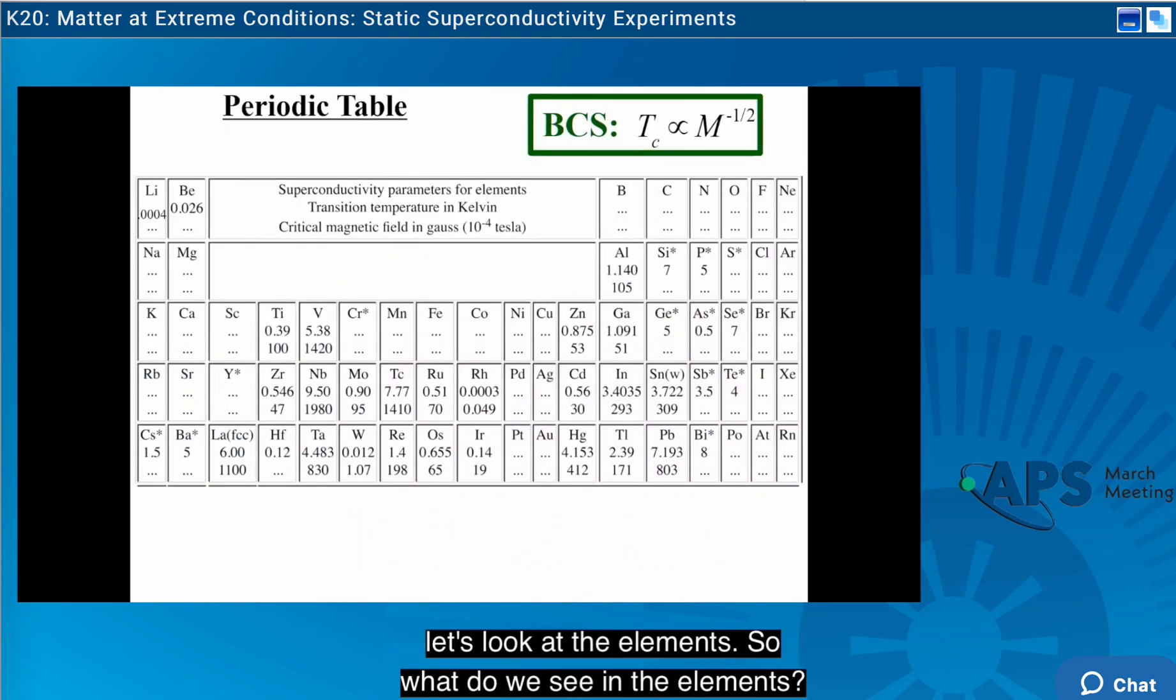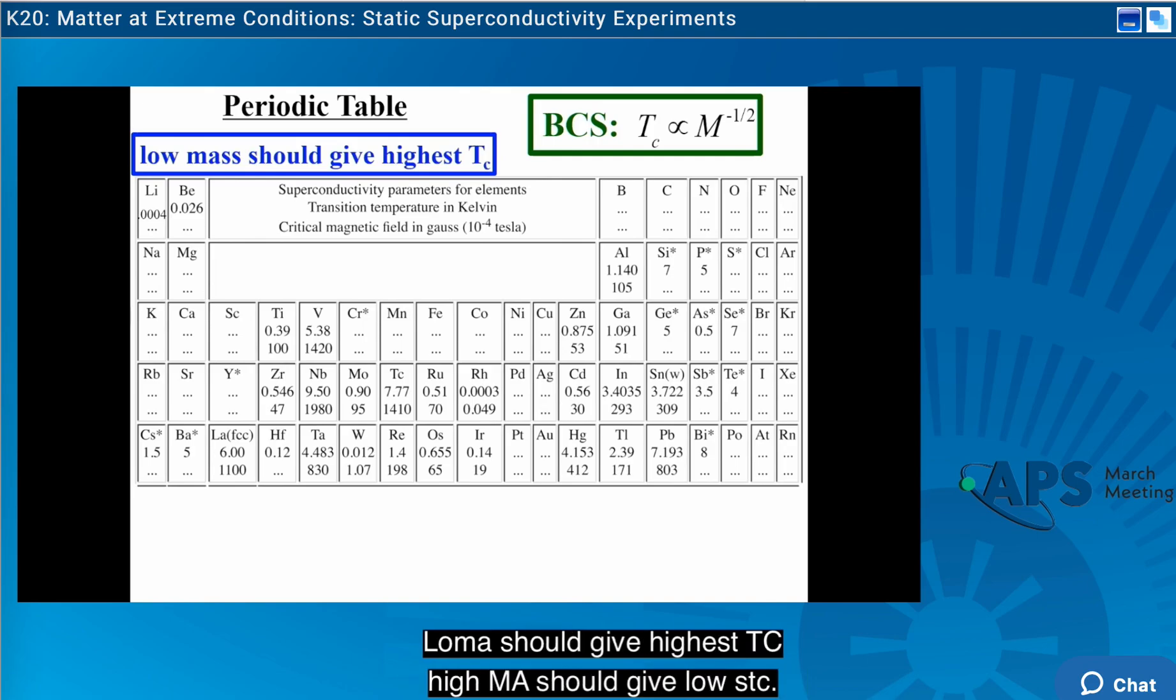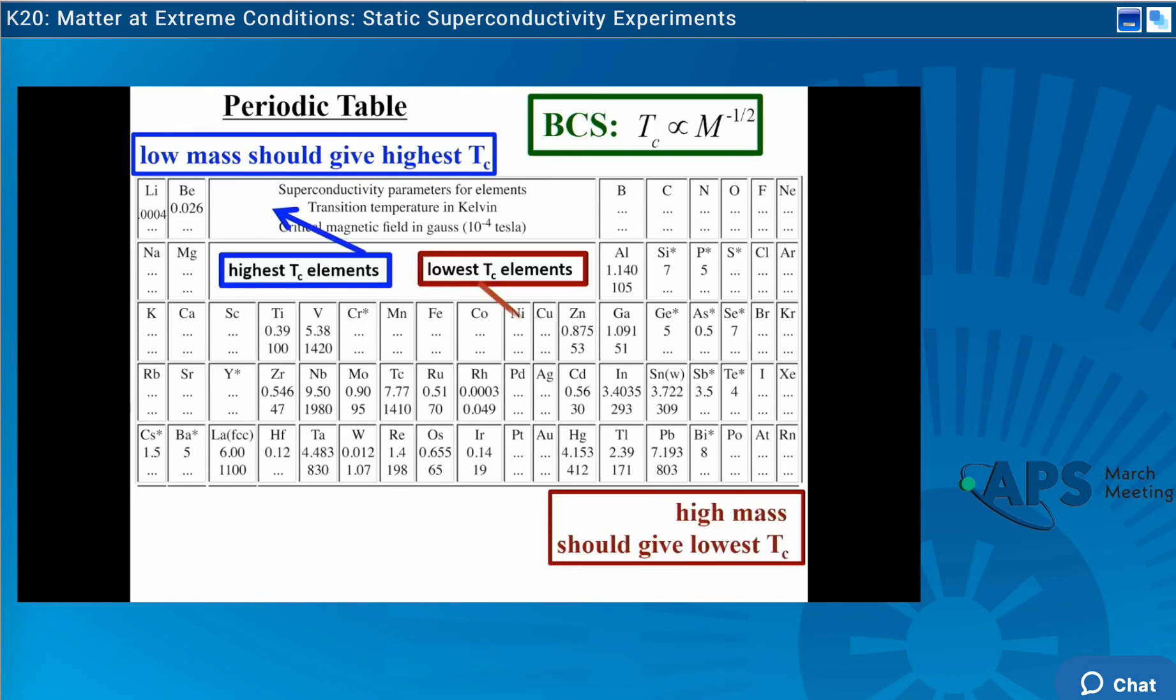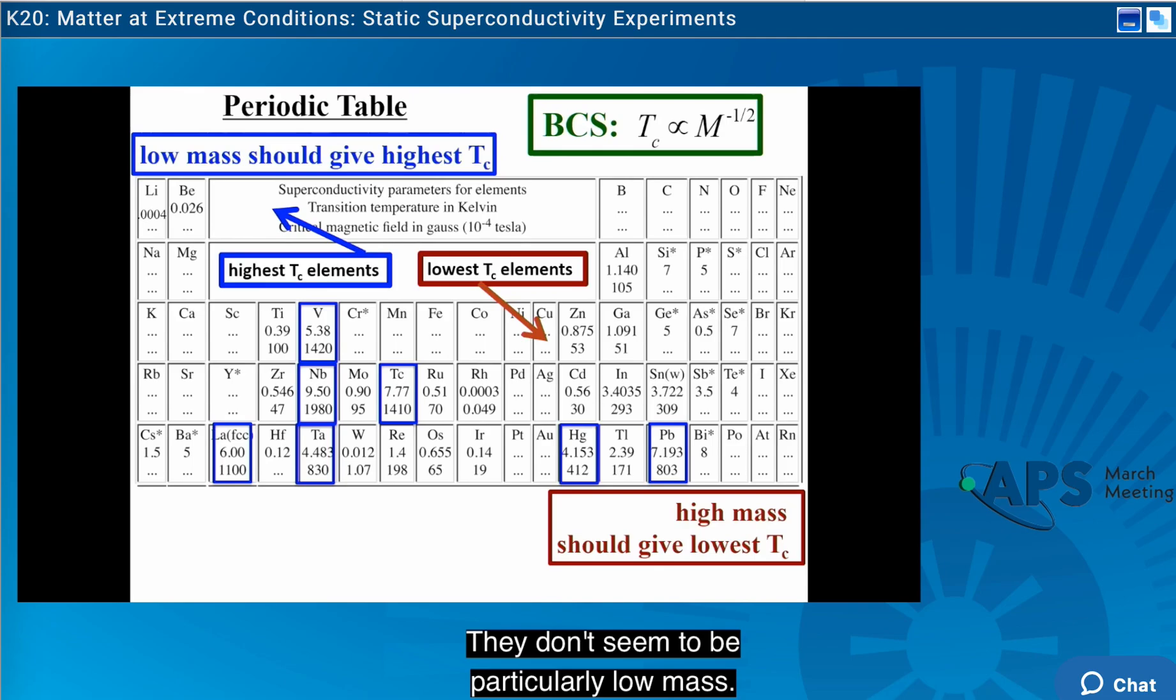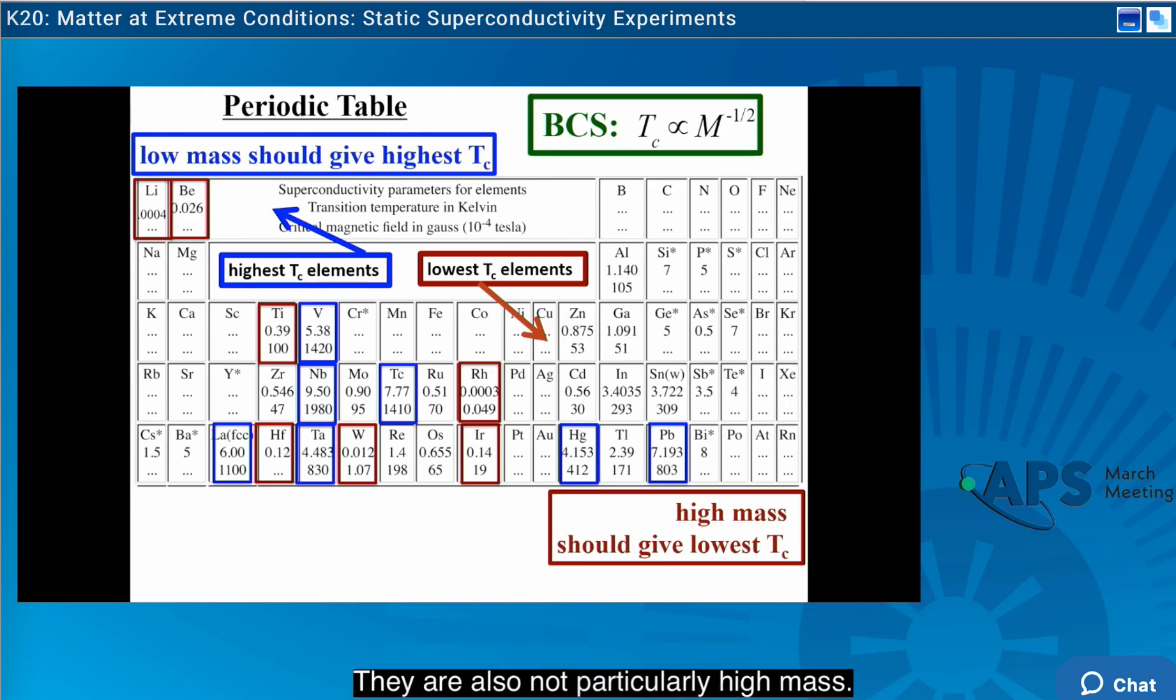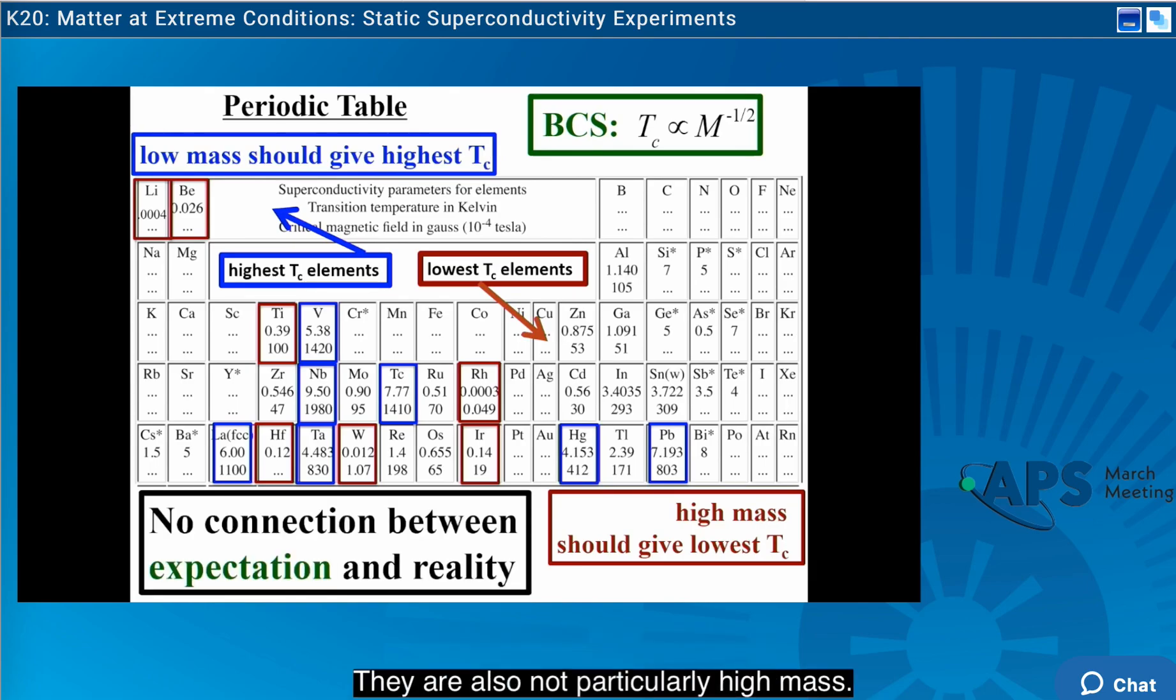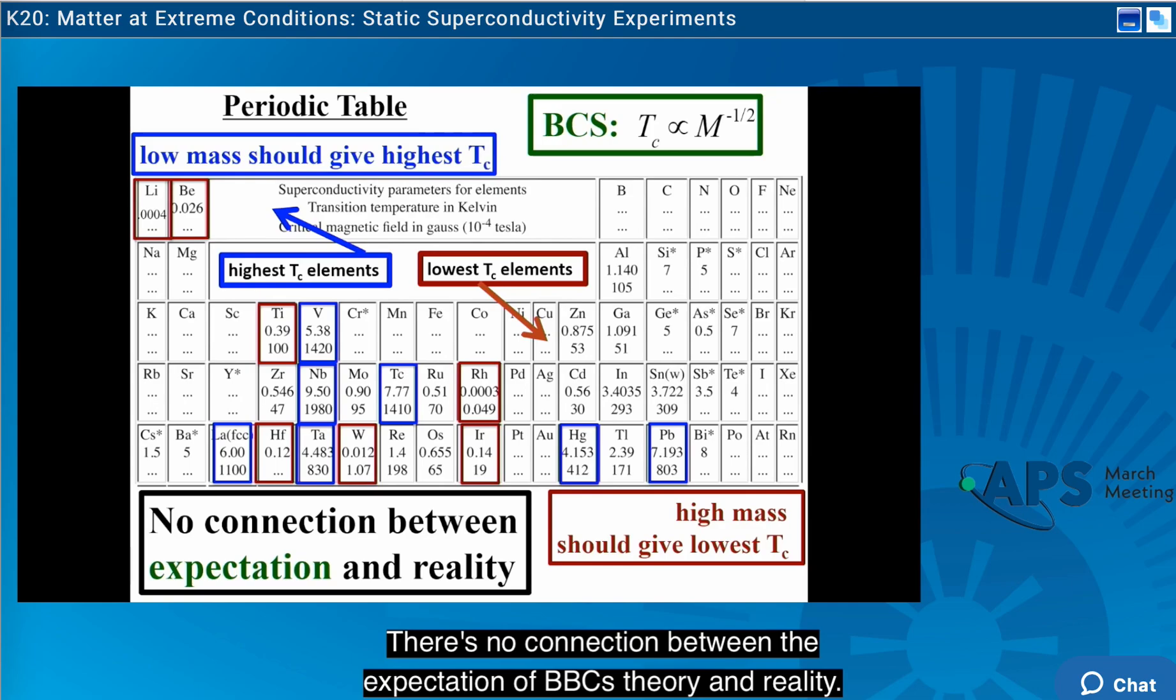So BCS theory says that TC is proportional to omega D over m to the one half. Let's look at the elements. So what do we see in the elements? Low mass should give high TC, high mass should give low TC. And what do we see? The high TC elements are the seven elements here. They don't seem to be particularly low mass. The low TC elements are the ones in brown here. They are also not particularly high mass. There's no connection between the expectation of BCS theory and reality.